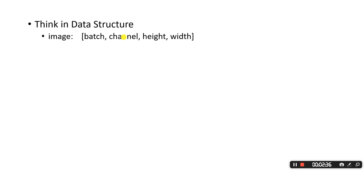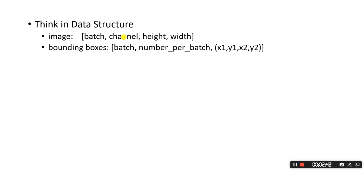Also, when we talk about bounding boxes, what comes to your mind is not just a bounding box. What comes to your mind is a three-dimensional tensor: first is batch, second is number of boxes, and third is four — the coordinates of a bounding box. That's how it is represented in PyTorch.